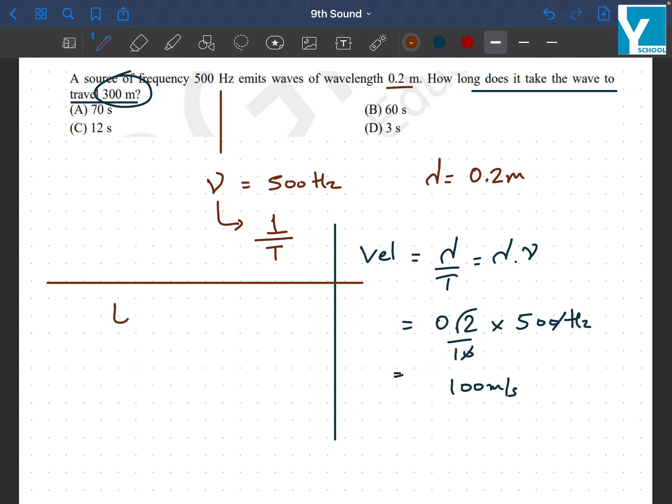So simply t is equal to distance upon velocity. Distance is 300 meters and velocity is 100 meters per second. Your time will be 3 seconds.